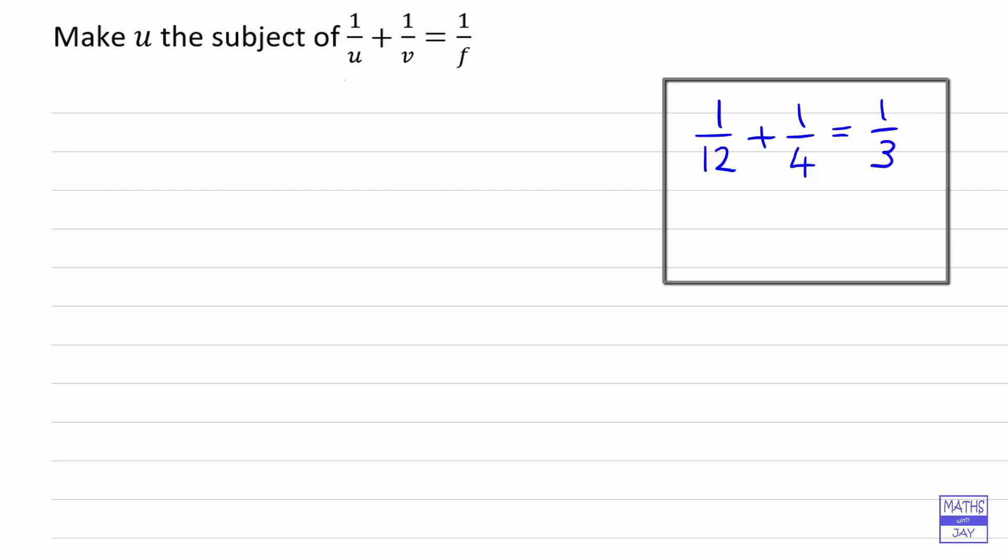So we can then see that if we try to just do this it would not work, would it? What I'm trying to show you is that you can't say that twelve plus four is equal to three. Obviously it's not, is it?